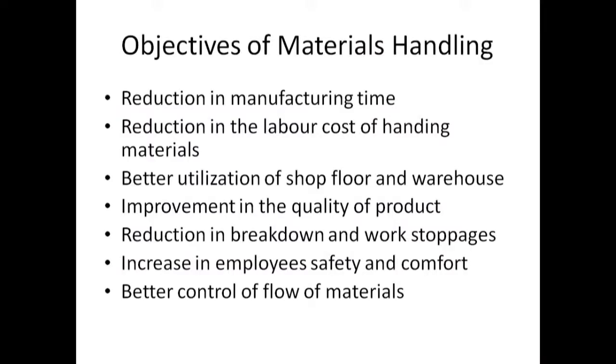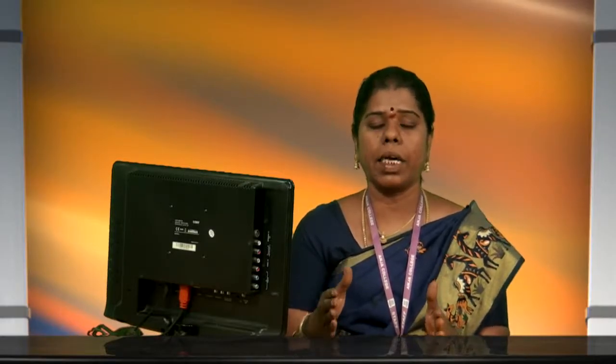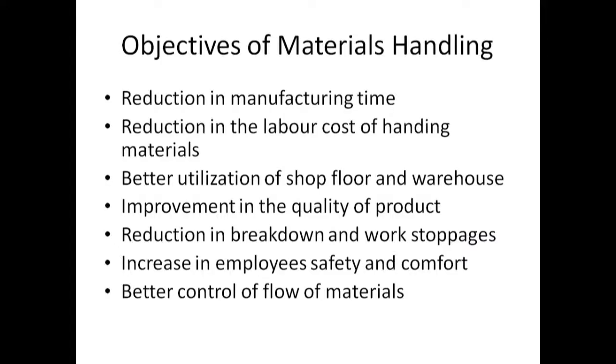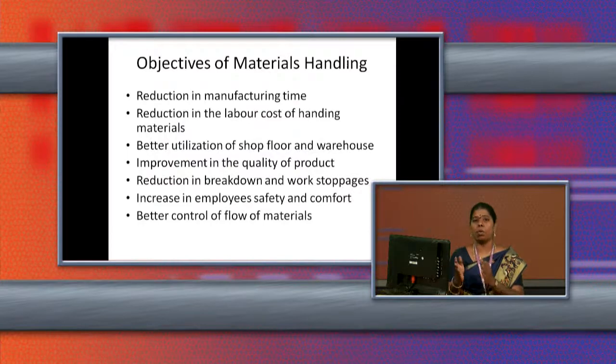The third objective is better utilization of shop floor and warehouse. The shop floor is the production area where actual production takes place. The shop floor area can be effectively utilized if we use proper material handling equipment. Then, improvement in quality of product — if the materials are handled properly in an organization, the quality of output will definitely be good.